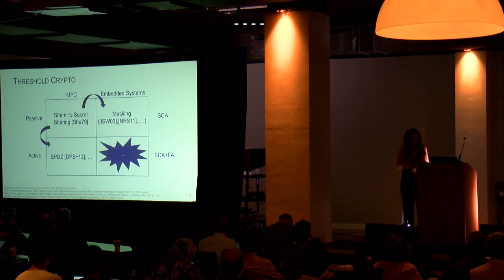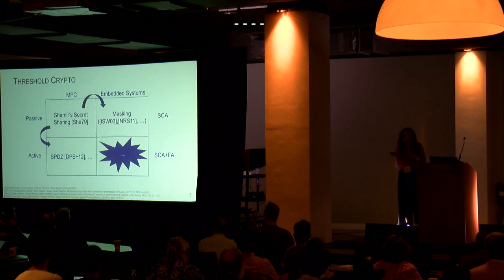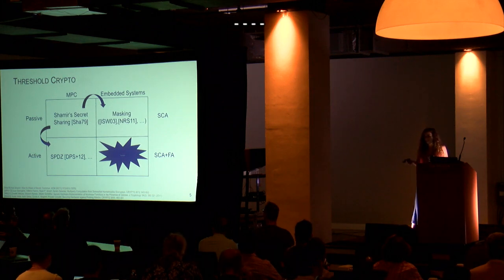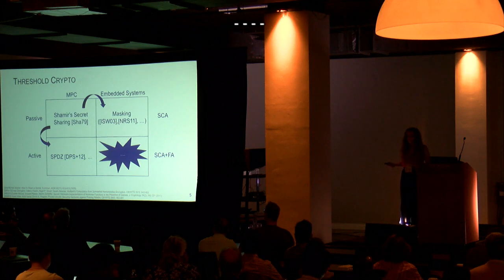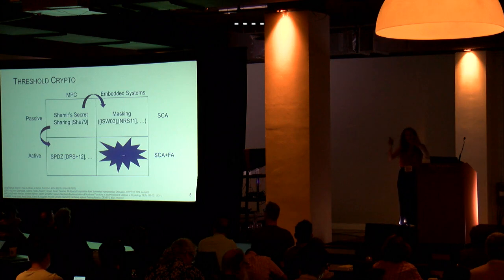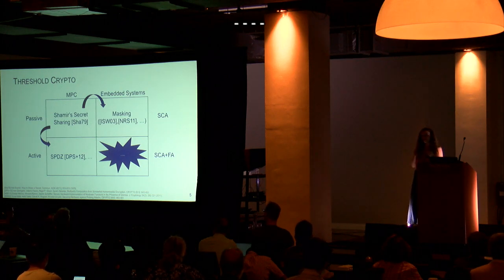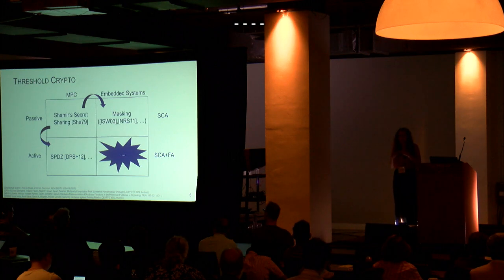In the field of threshold cryptography, it's quite common to say that masking is like the embedded systems variant of multiparty computation, because it's based on Shamir's secret sharing. In recent years, the multiparty computation community has been looking at active adversaries — parties that don't only listen to protocols, but also actively deviate from it, and thus inject faults in the calculation. We can see that as the MPC variant of what we're trying to do when combining side-channel and fault countermeasures.